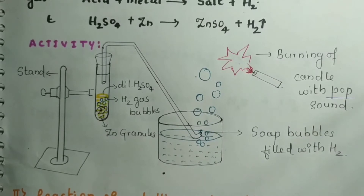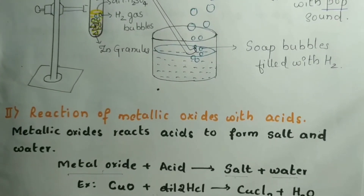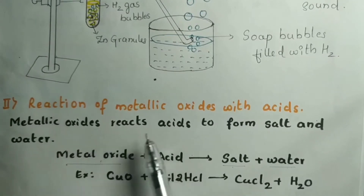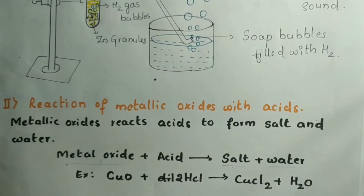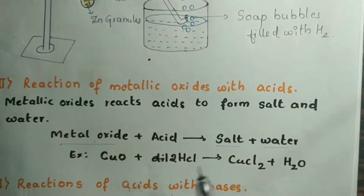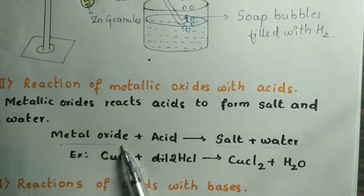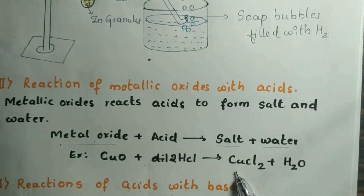The next reaction is the reaction of acids with metallic oxides. Metallic oxide reacts with acid to form salt and water. For example, copper oxide reacted with hydrochloric acid forms copper chloride (salt) plus water.